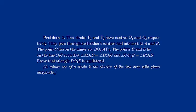Problem 4. Two circles, gamma 1 and gamma 2, have centres O1 and O2 respectively. They pass through each other's centres and intersect at A and B.